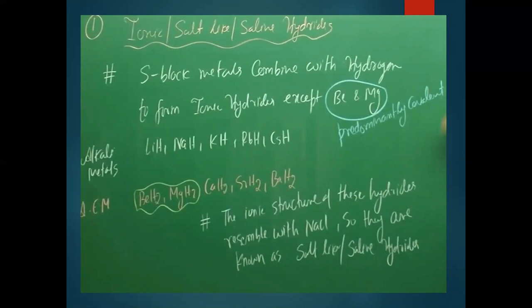Since ionic bonds are formed, electrons are transferred from metal to hydrogen. Hydrogen accepts the electron and exists as the H⁻ ion — as an anion — because metals have the tendency to lose electrons. All s-block elements — group 1 alkali metals and group 2 alkaline earth metals — form ionic hydrides, except beryllium and magnesium, which have covalent character.